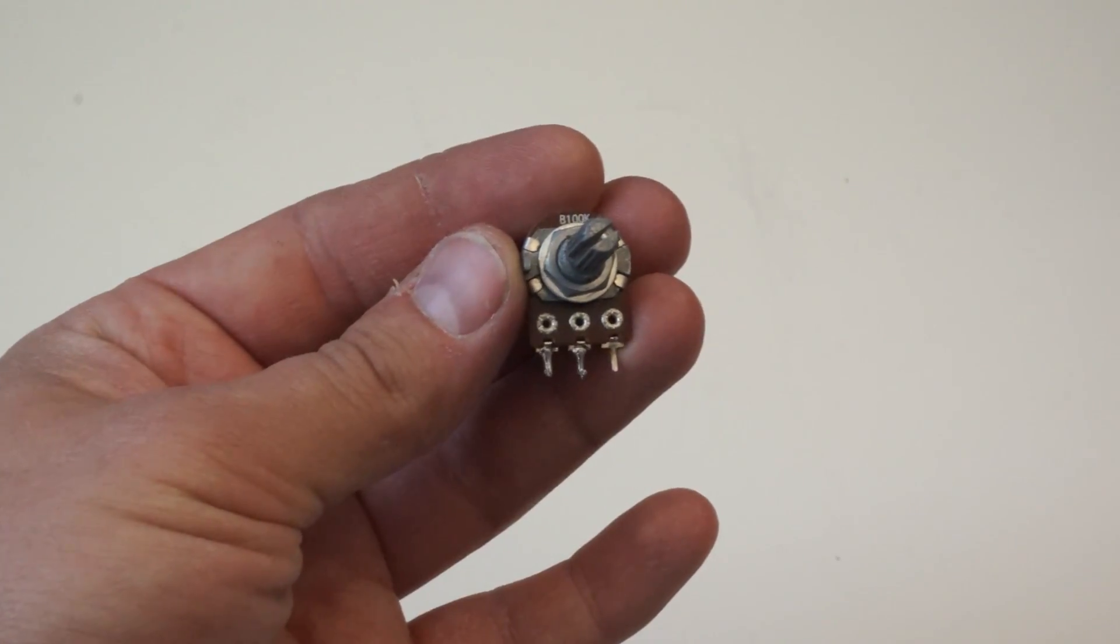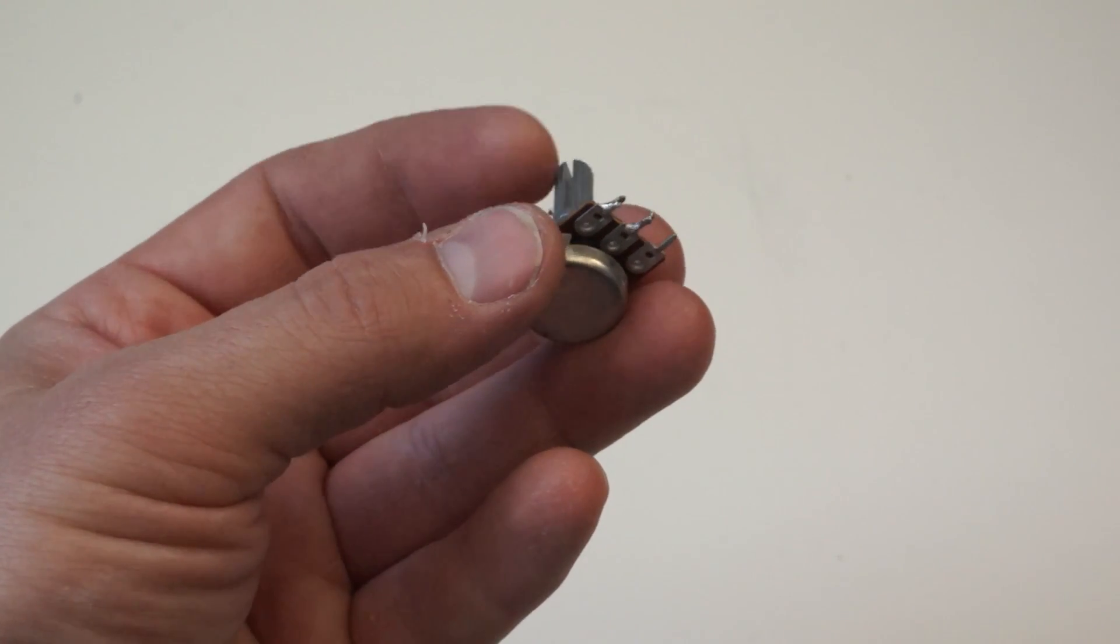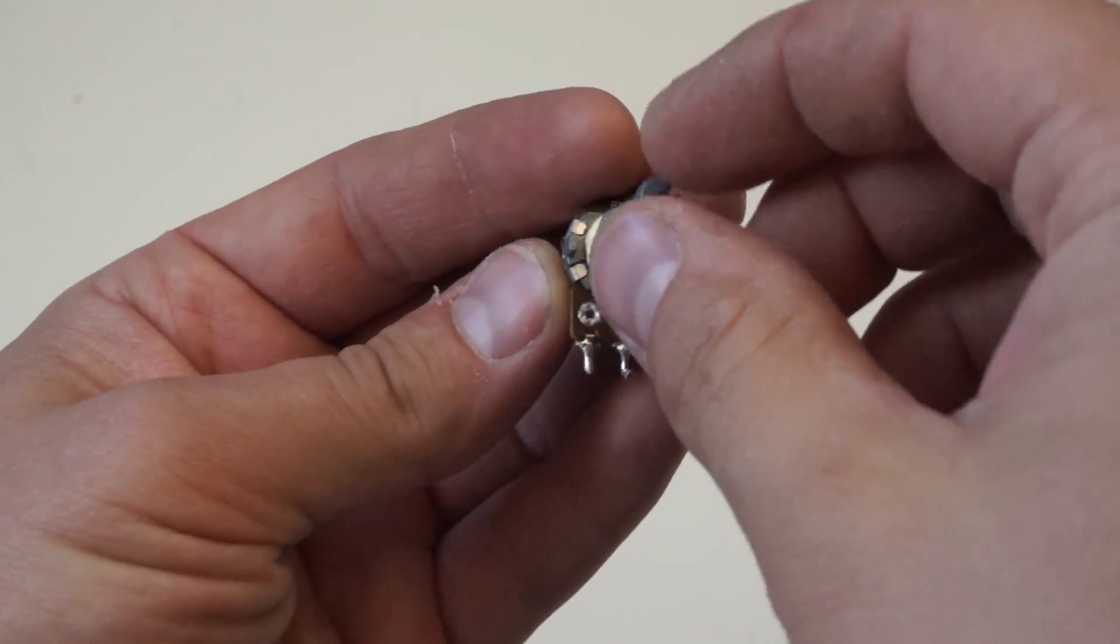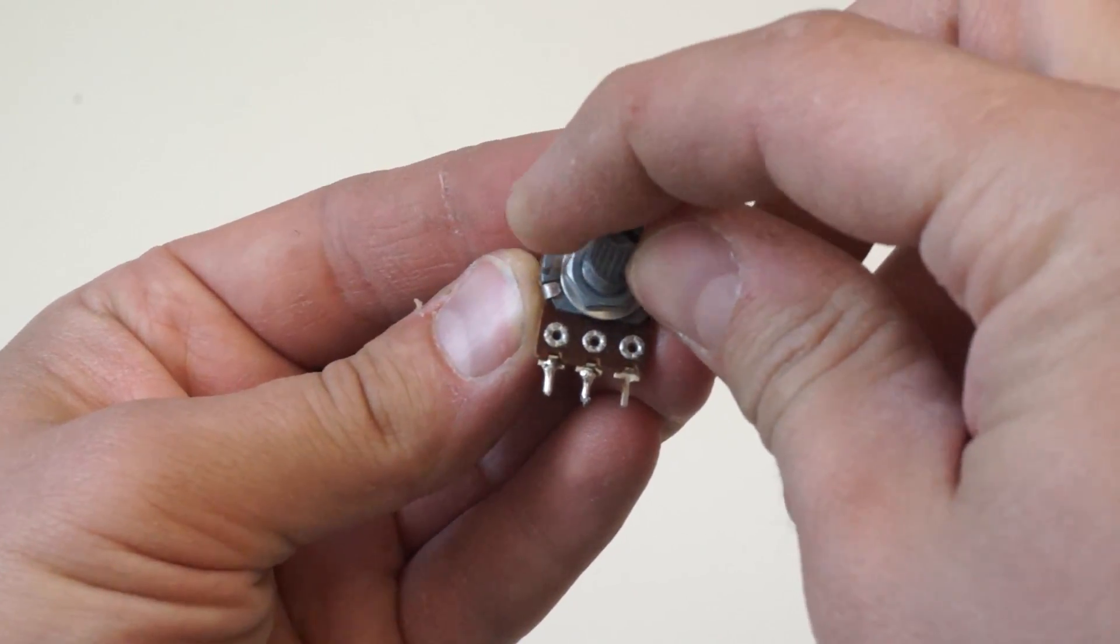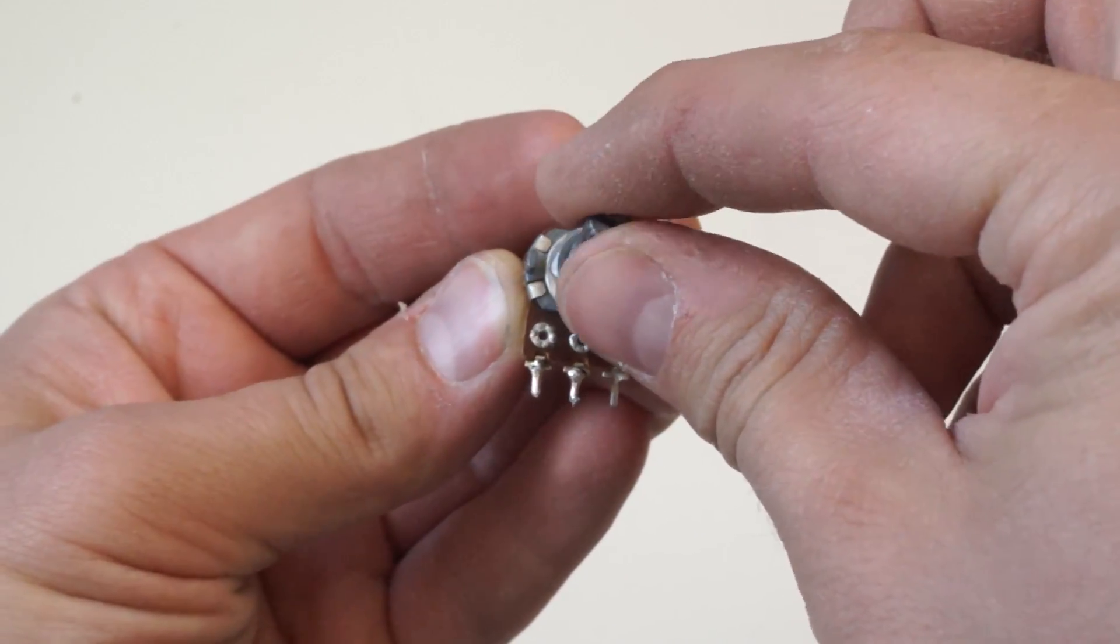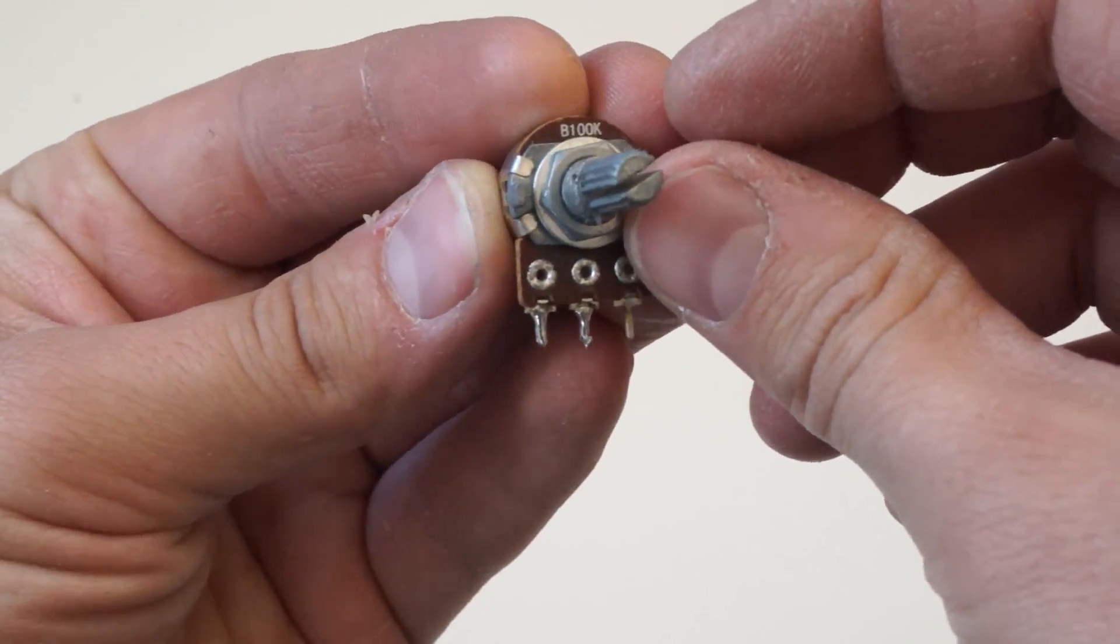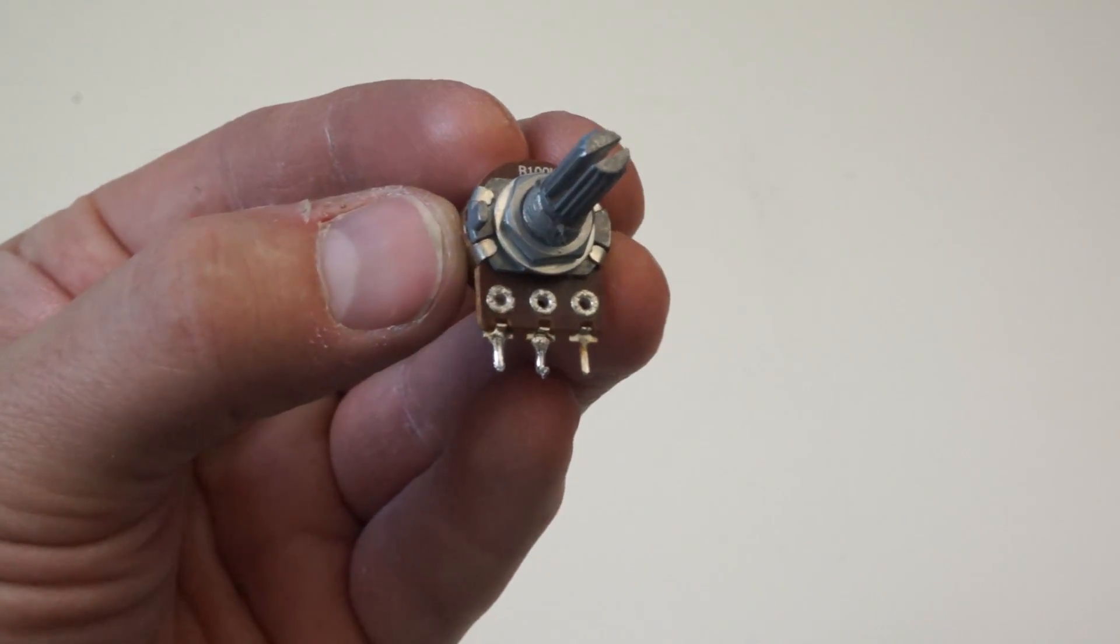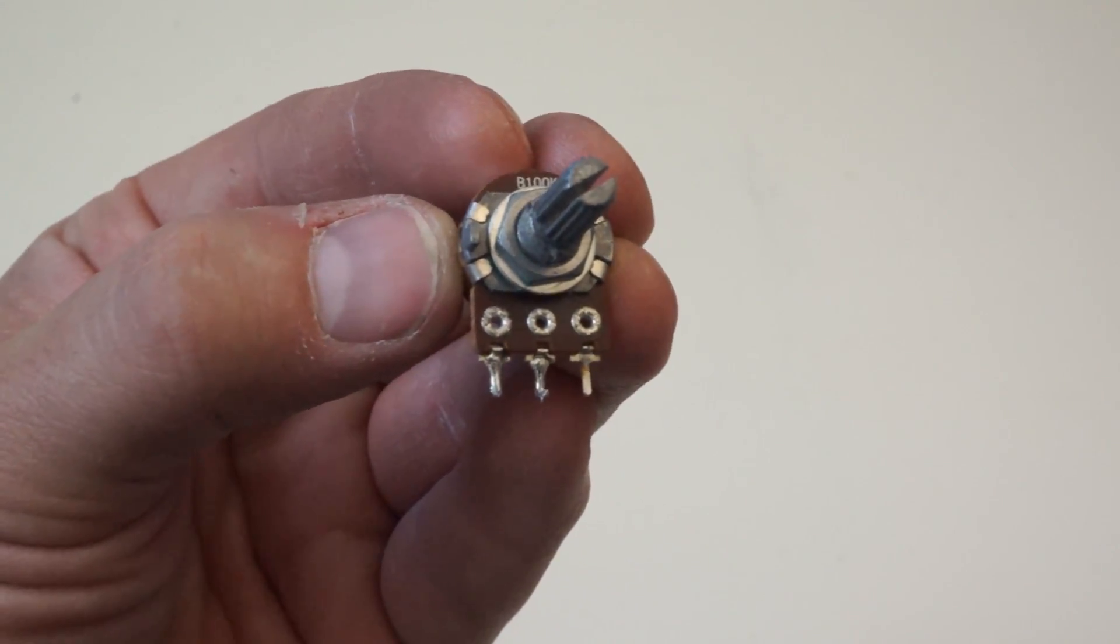So this is what a standard pot looks like. You've got three terminals and a knob in the middle. Between the left and right terminal you always have the full resistance of the potentiometer. In this case it's 100k ohms, but between the left and center and right and center it changes. That center pin is called the wiper, and as you turn the knob it's changing the resistance. This is what tells your driver how much current to pass to the LEDs.